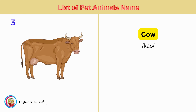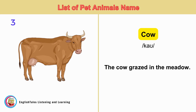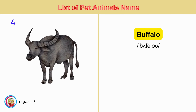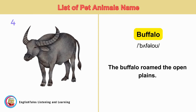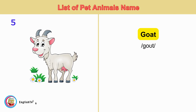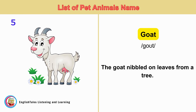Cow. The cow grazed in the meadow. Buffalo. The buffalo roamed the open plains. Goat. The goat nibbled on leaves from a tree.